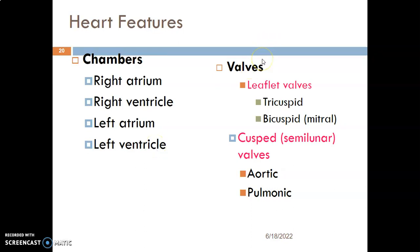We have leaflet valves and cusped valves. The leaflet valves include the tricuspid valve and the bicuspid valve, which is also called the mitral valve. Tricuspid because it has three cusps and bicuspid because it has two cusps. Then you have the semilunar valves, which are the aortic valve and the pulmonic valve at the pulmonary trunk.